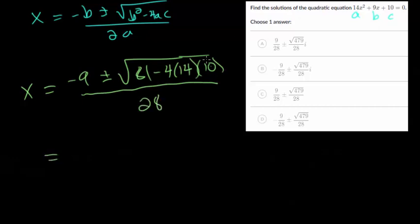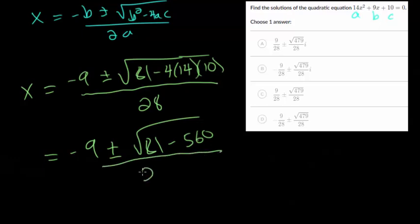So now we just have to simplify under the square root. So minus 9 plus or minus, we have 81 minus, let's see that's 140 times 4 would be 560. And then all divided by 28.